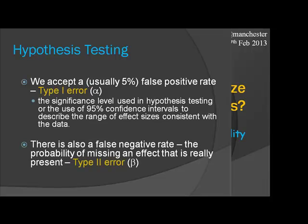When you're doing a hypothesis test, you're accepting a false positive rate. Sometimes you'll find a result that isn't real, and that's what the 5% significance level is about. We accept that 5% of the time, if there's no effect there, we might find one. That's what we mean by a 5% significance level — or if you want to be more modern about it, that's where your 95% confidence levels come from.